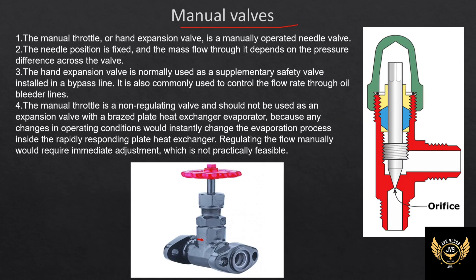Next we have manual valves — these are hand-operated valves, used in water treatment plants and as bypass valves. The valve is fixed, and the pressure difference between the valve and evaporator is set manually. A disadvantage is that if there are any changes in the evaporator load, manual operation is required to adjust.